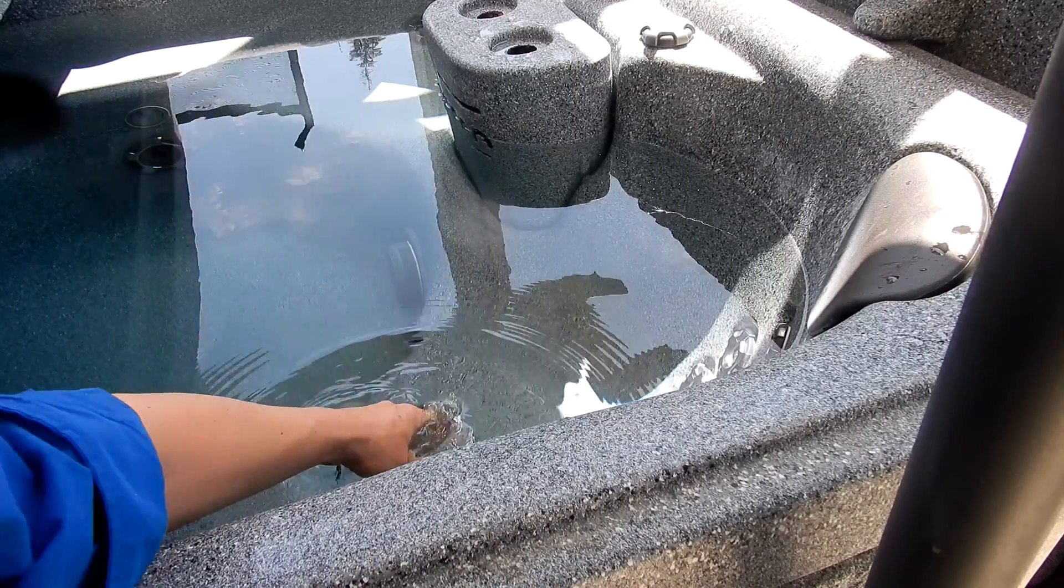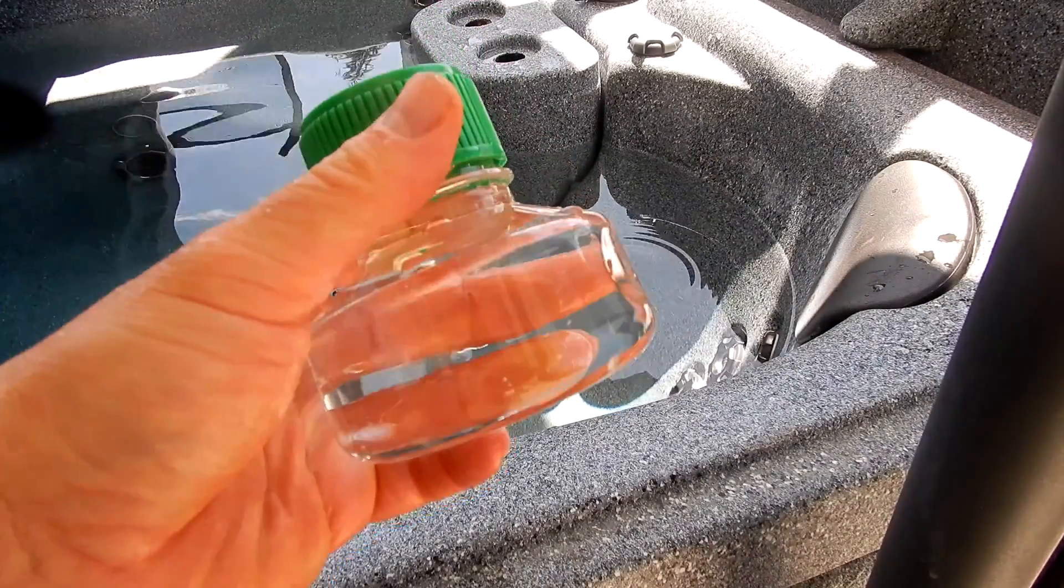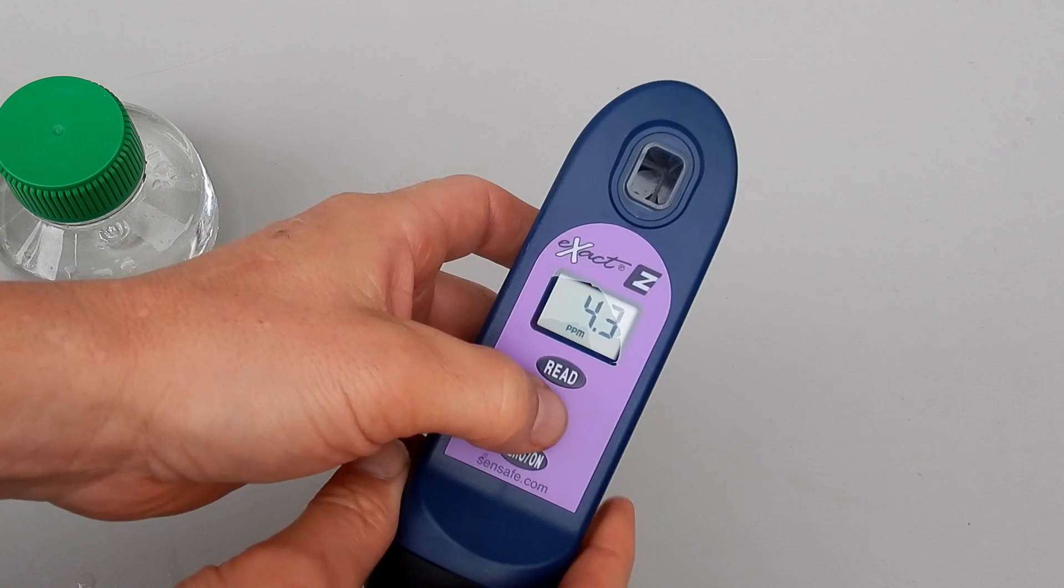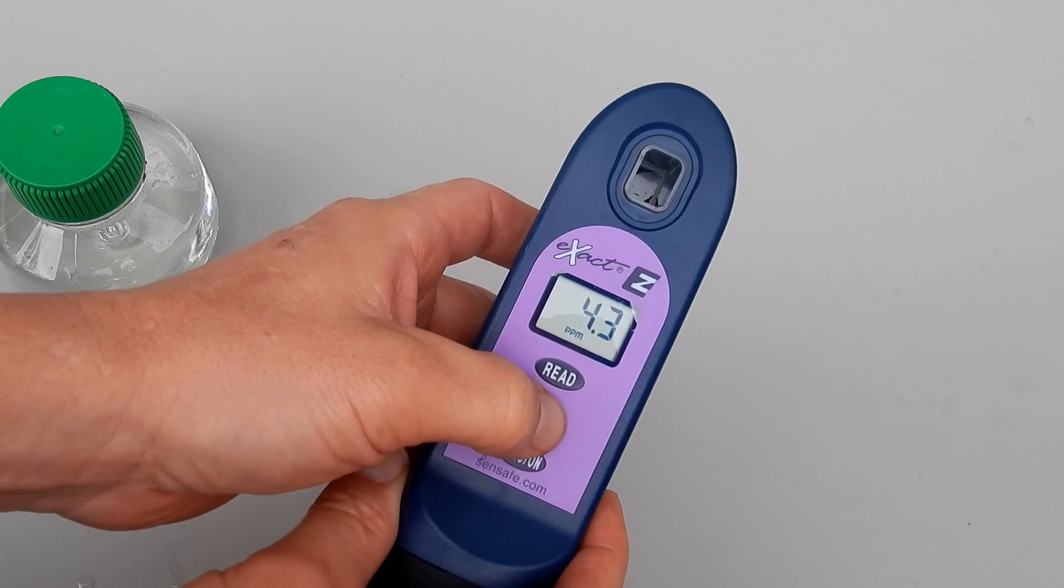Simply get a water sample from your spa to do the testing with. This is a very easy to use photometer. Simply turn on the unit here. Then you would just scroll through the menu for the different test factors.